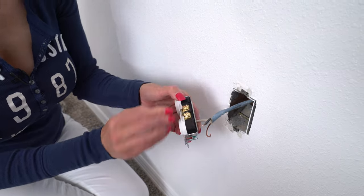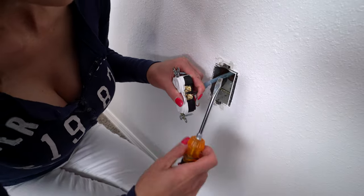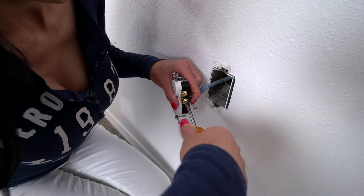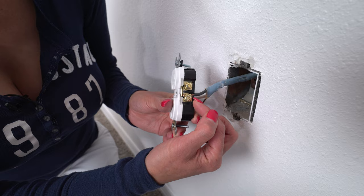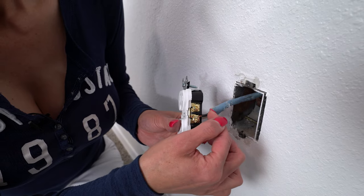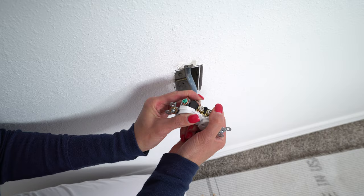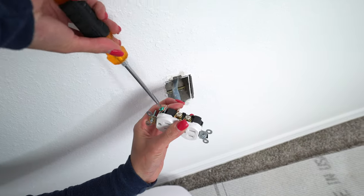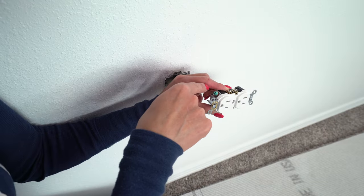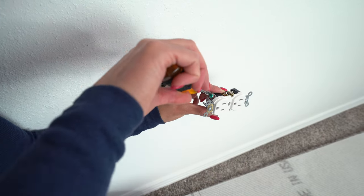Now we're going to do the hot. We don't want this plastic underneath the screw or the tab. And we also don't want it so far back that the wire is exposed. Now the ground. Tighten it in there. You want your loop to go in the direction that you're screwing.